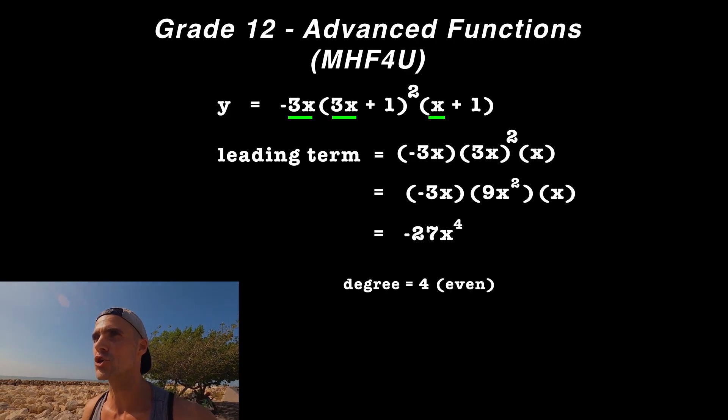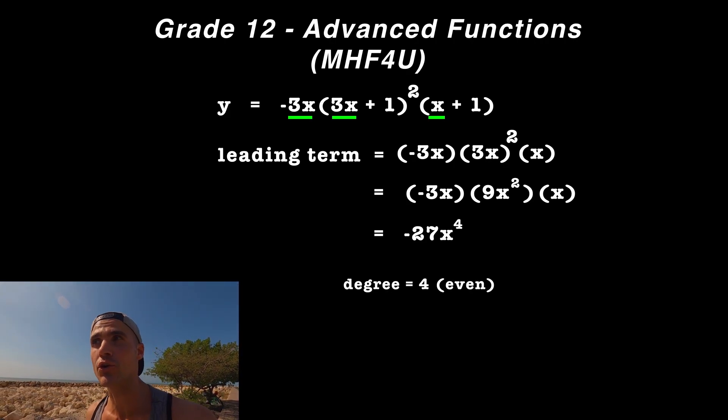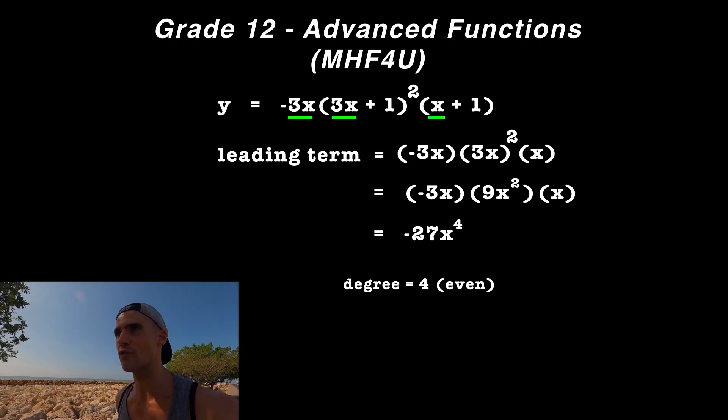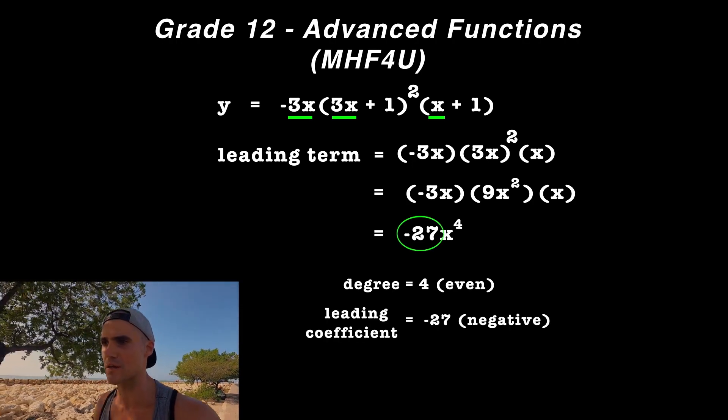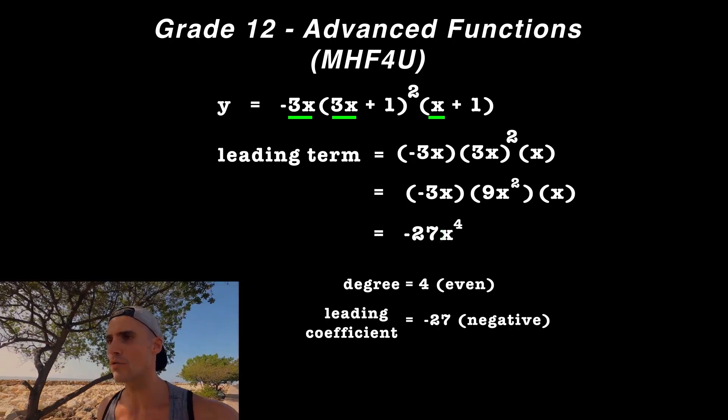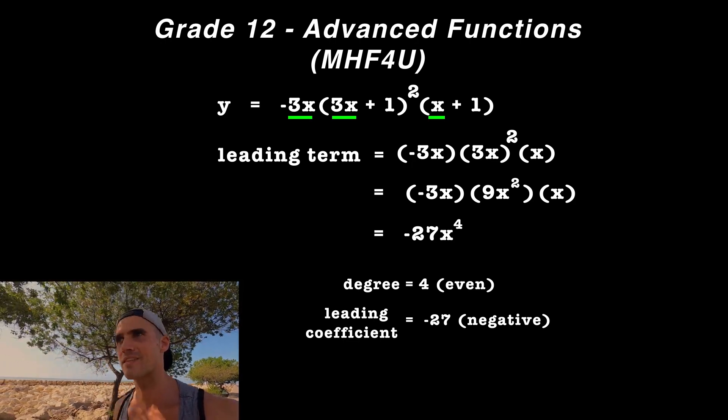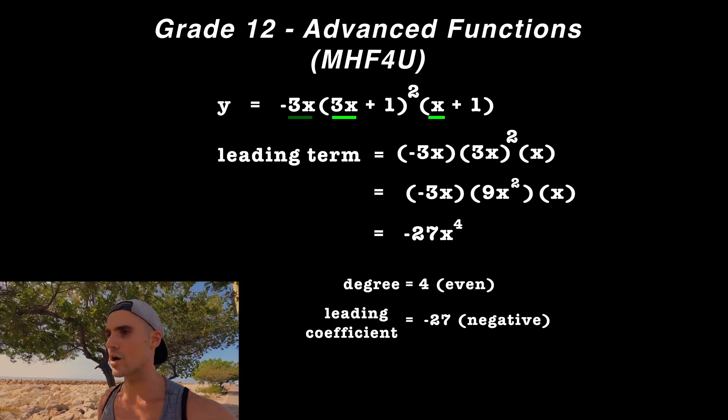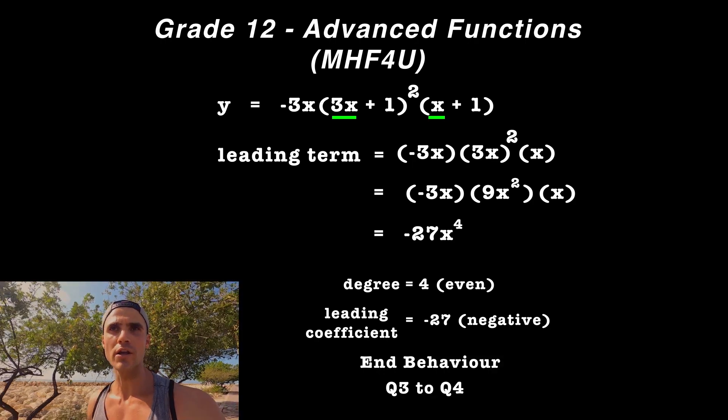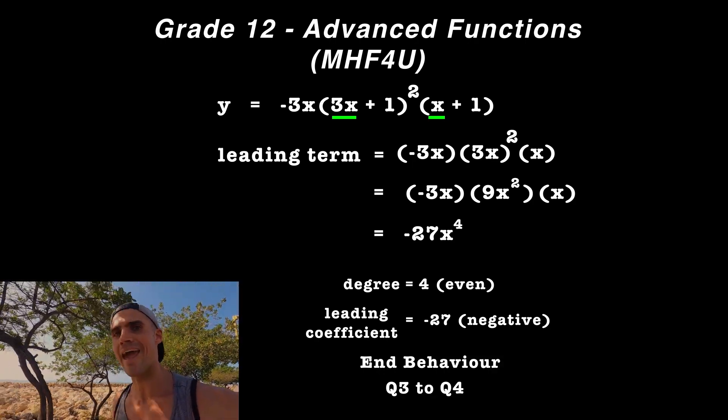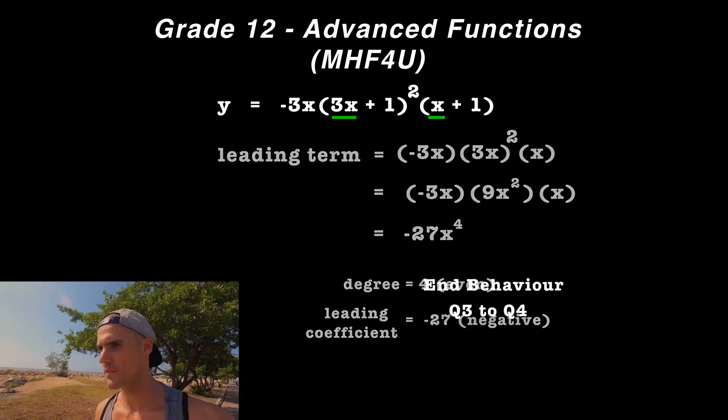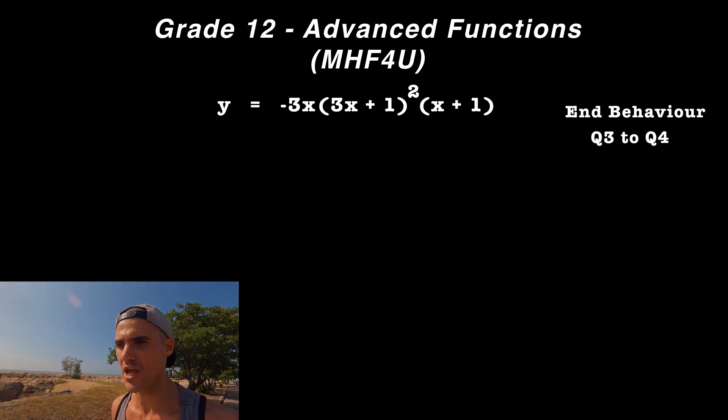From the end behavior chart, we know that in this case, we start in quadrant 3 and end in quadrant 4. Then we get our x-intercepts.